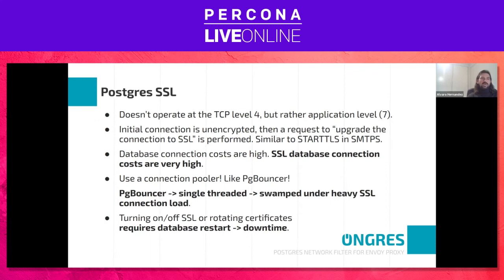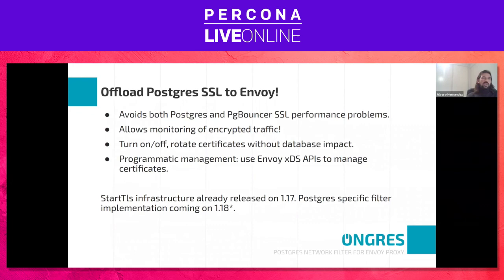So is there any way to solve all these problems? The obvious answer is to offload SSL to Envoy — we already have the filter in place and StartTLS support. This avoids the performance problems I mentioned from Postgres and PgBouncer. It also enhances our observability and monitoring capabilities, because now we're able to get the same metrics Fabrizio mentioned before, but for encrypted traffic too. Otherwise we would just pass it through.